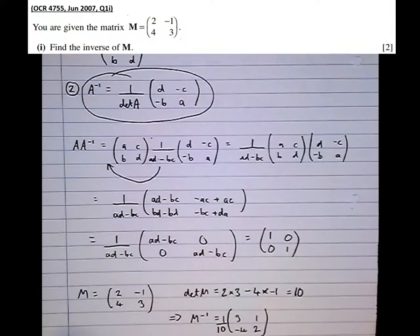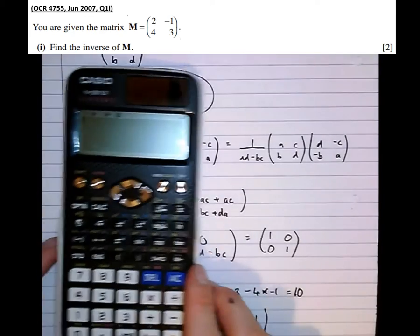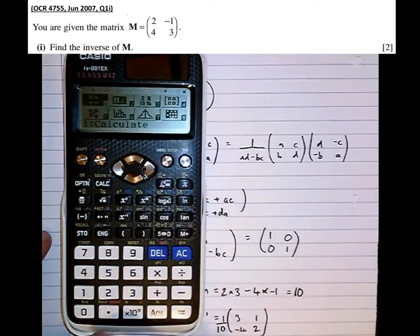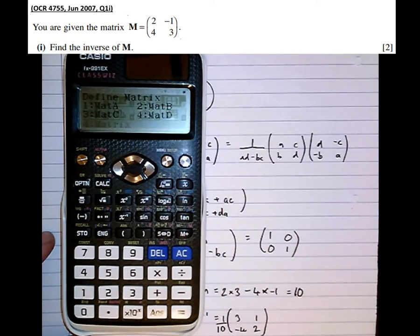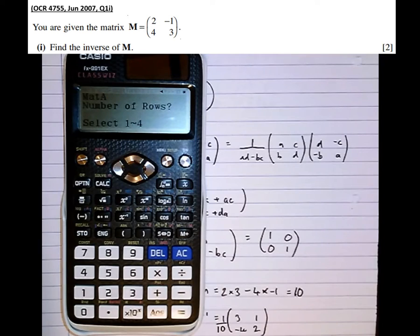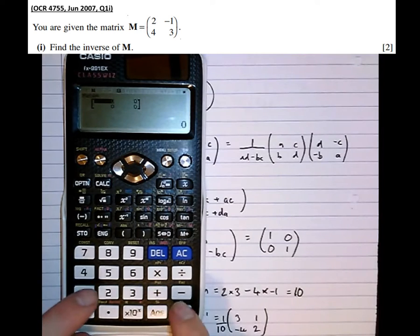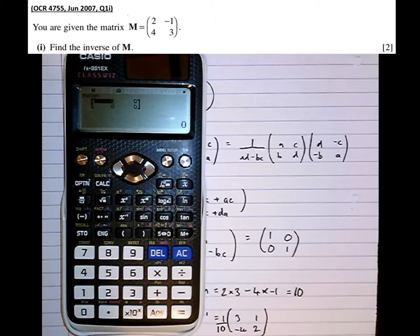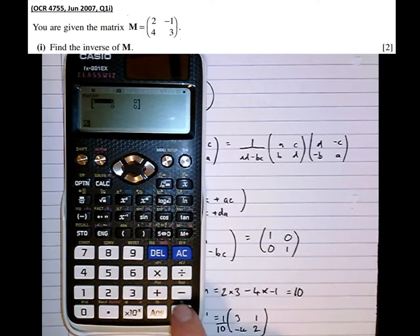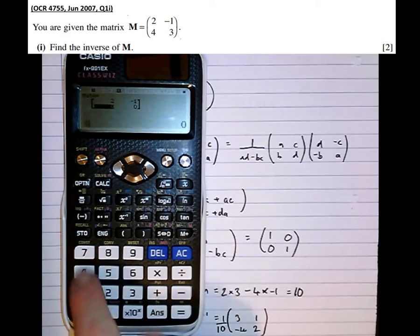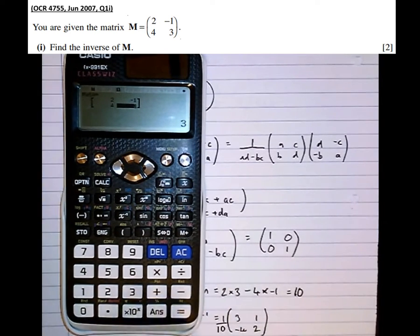Now we can verify this using a calculator. Let's put the calculator in matrix mode: press menu, scroll over to matrix mode, that's mode number 4. Define matrix A as 2 by 2. The calculator inputs values as rows, so enter 2, then minus 1, then minus 4, then 3. That is now matrix A.